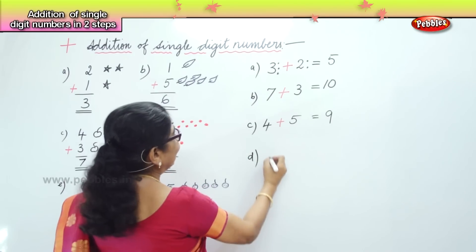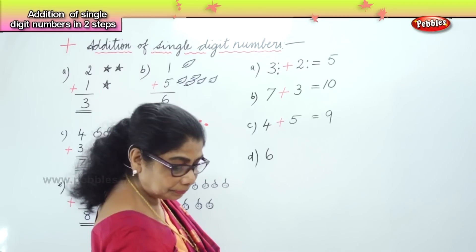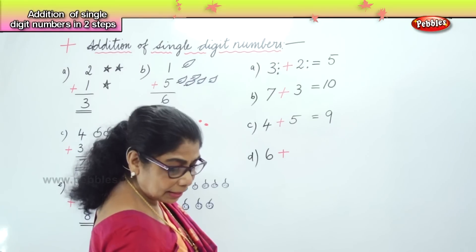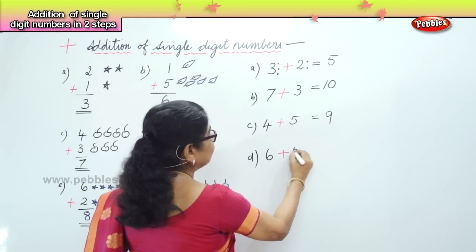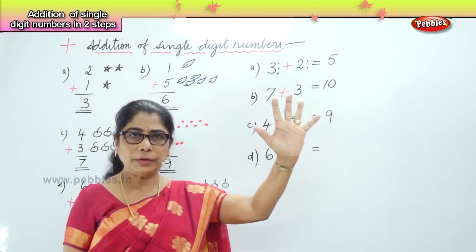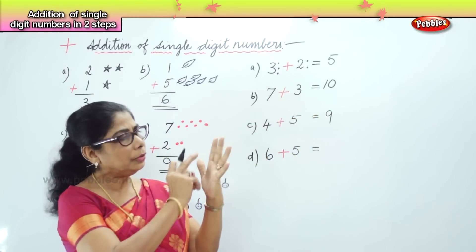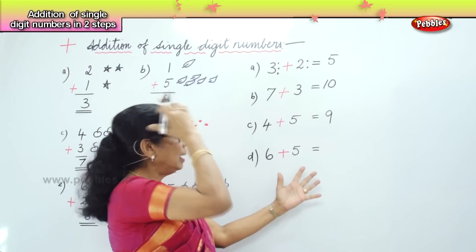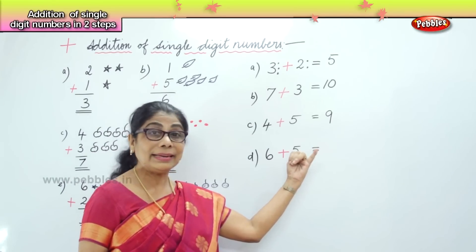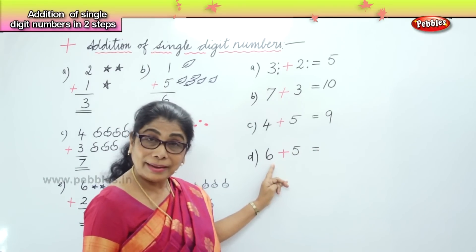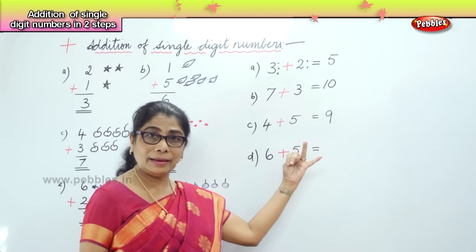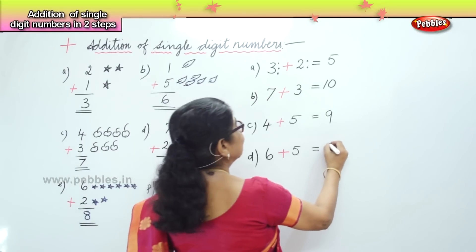Another sum: 6 plus 5. What is 6 plus 5? Put the big number 6 in your mind and the small number 5 on your fingers. Count on from 6: 7, 8, 9, 10, 11. The answer is 11.